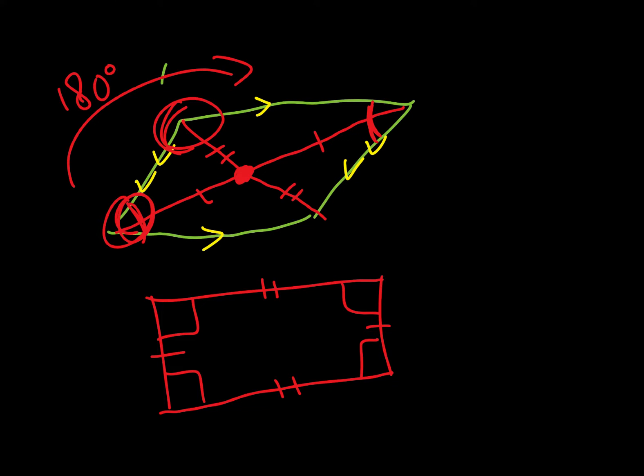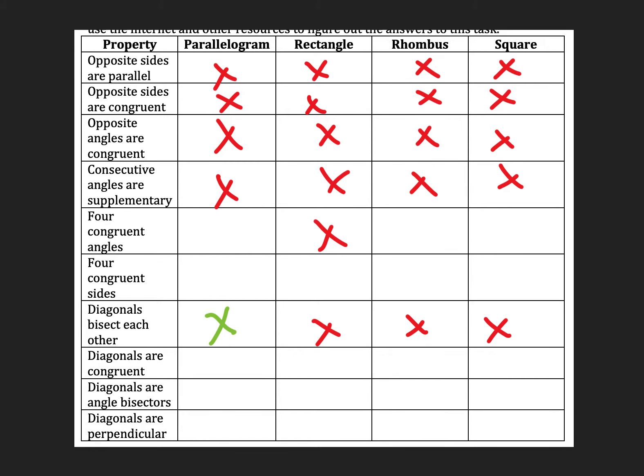Diagonals are congruent, so in this case that's going to be true. So if we draw a diagonal there, both of those yellow line segments are the same length. So diagonals are congruent, and then diagonals are angle bisectors, that's not true, and diagonals are perpendicular, that is not true either.